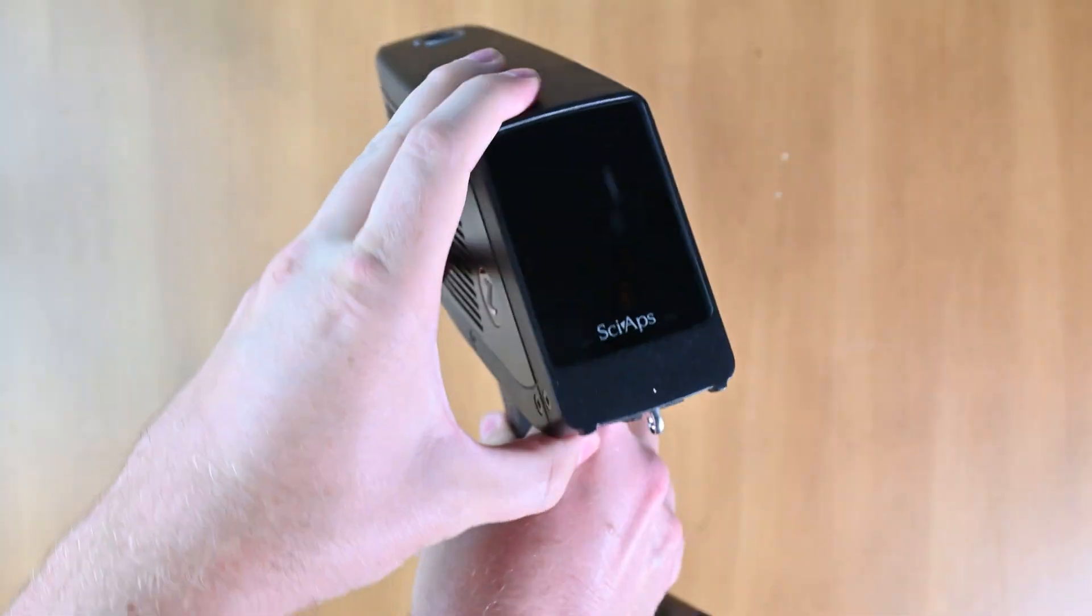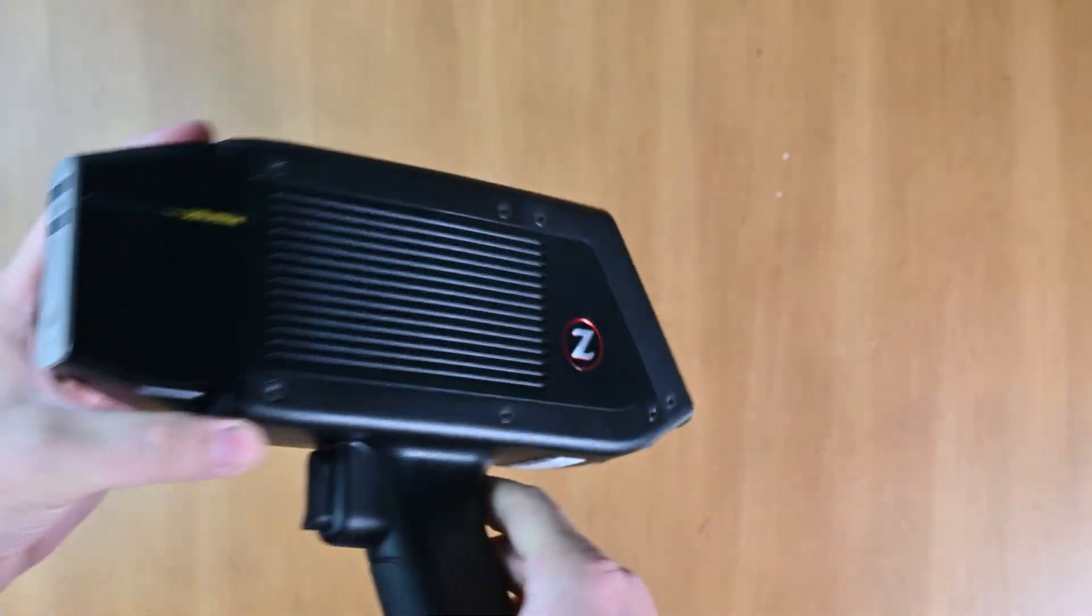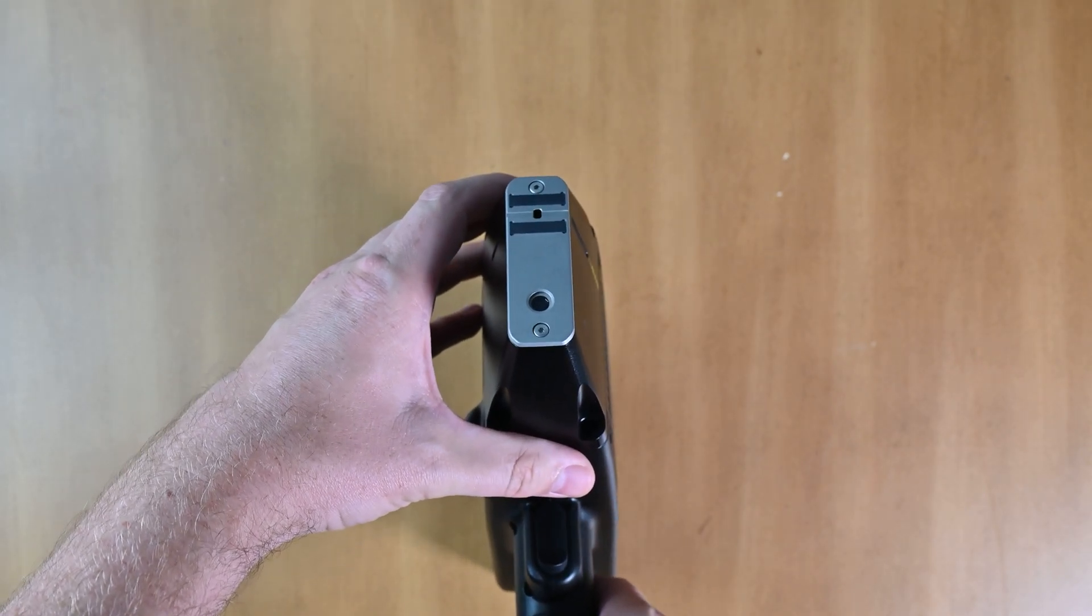The first thing we're going to do is make sure our analyzer is powered off. Now, turn the analyzer on its back, this back slant here. What you can do is just set that on a desk, a nice flat surface.